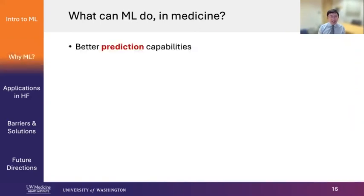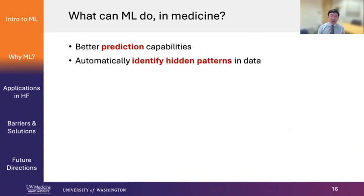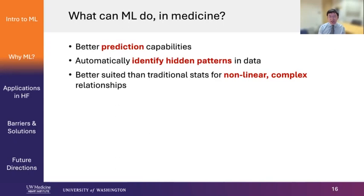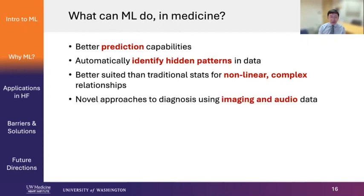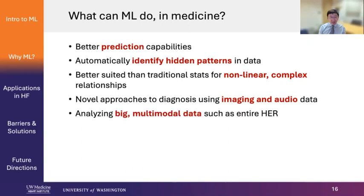What about in medicine? Probably the first thing you think about is that we can predict things and build better prediction models. But unsupervised machine learning is also very good at automatically identifying hidden patterns in data. Machine learning is generally better suited than traditional statistics for nonlinear, complex, highly interactive relationships. It's also a novel approach to making diagnoses using imaging and audio data, very good at analyzing big multimodal data in the EMR, and it can deal with real-time analysis and give you real-time results.